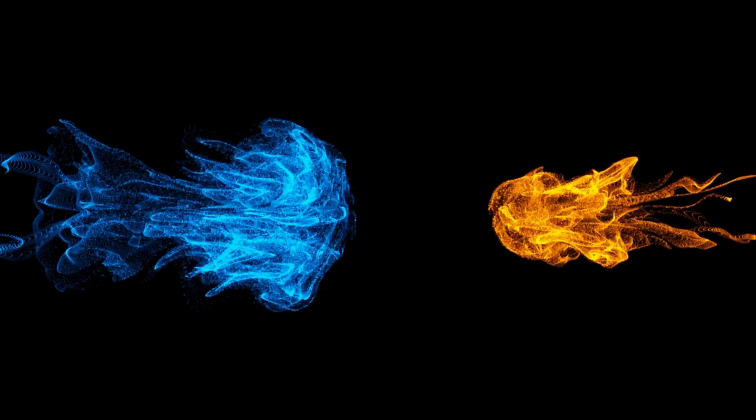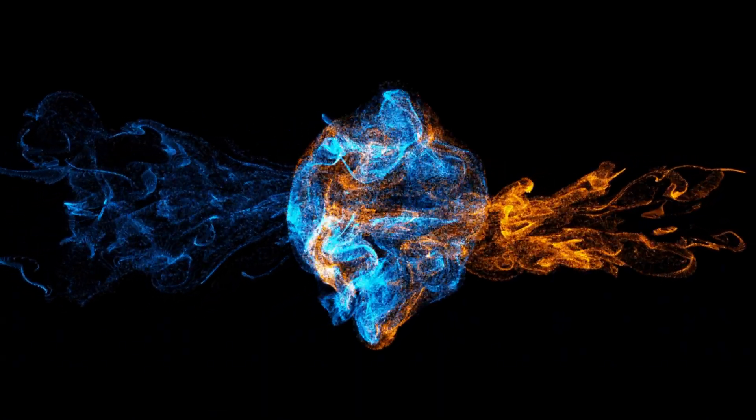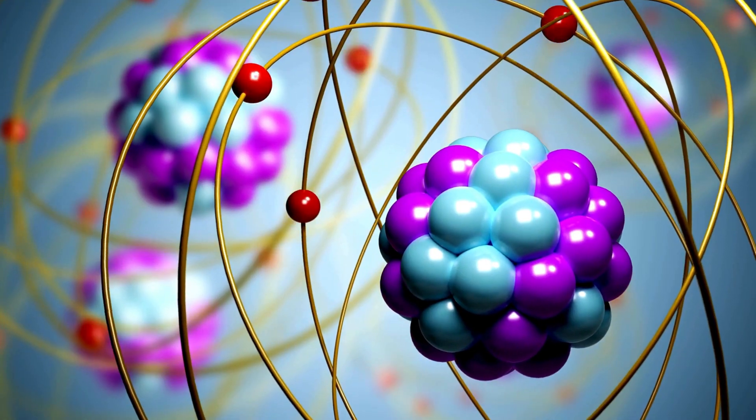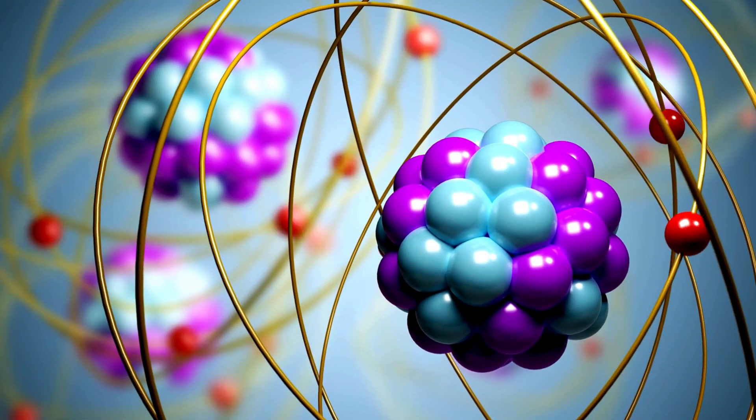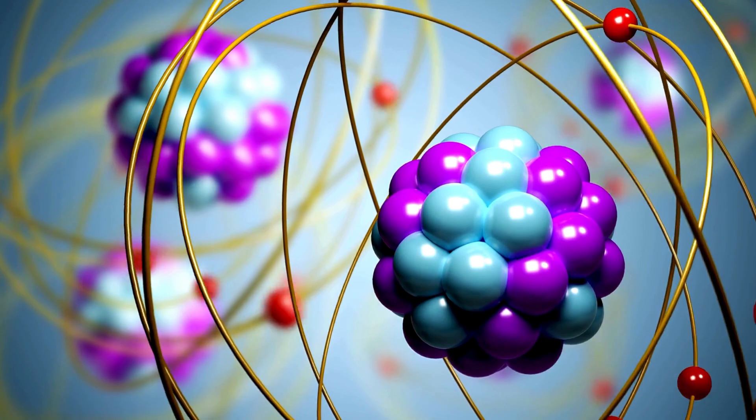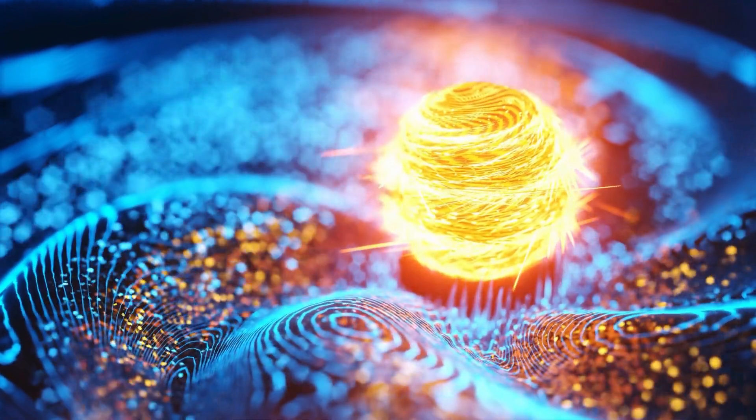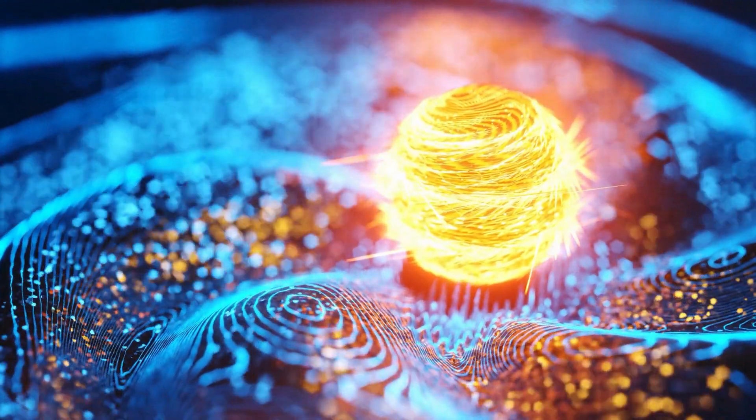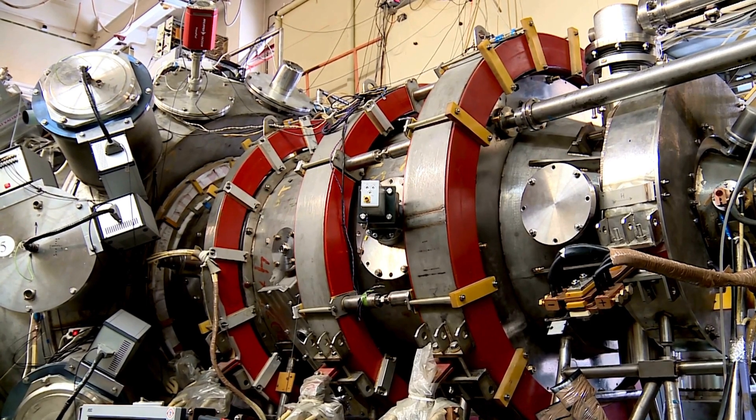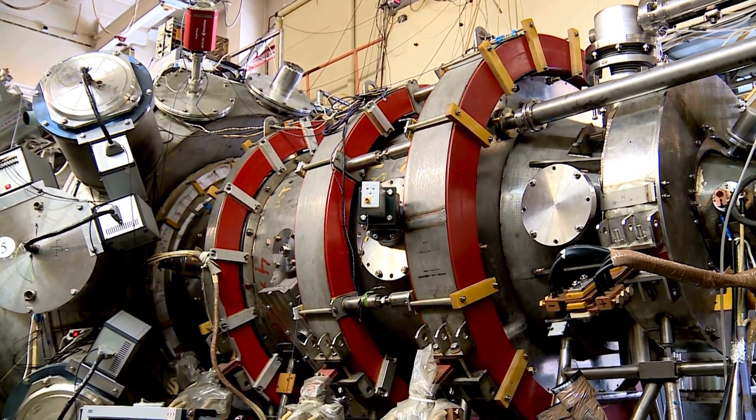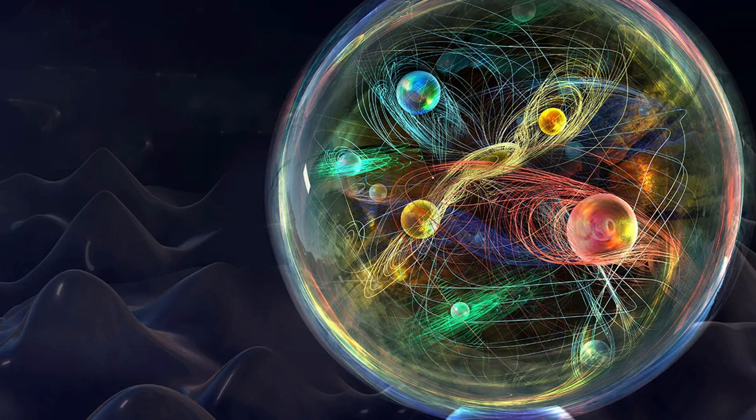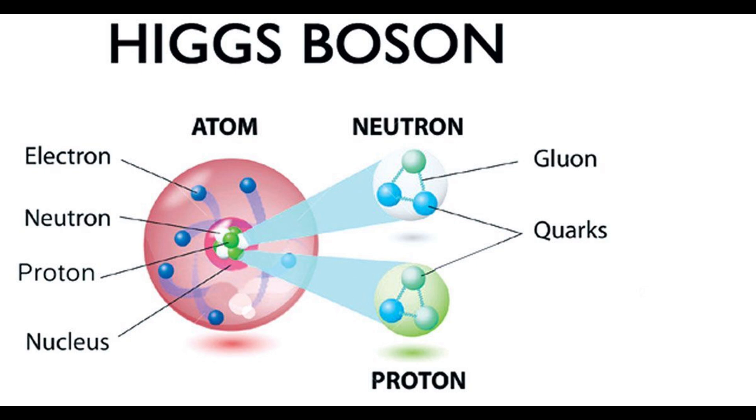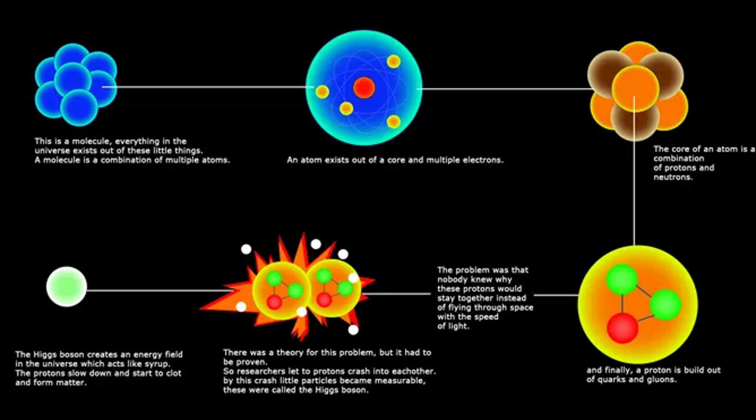While cosmic events like the bullet cluster provide clues, many scientists have turned to particle physics to search for dark matter on a smaller scale. In 2012, after decades of work, the discovery of the Higgs boson at CERN's Large Hadron Collider marked a major milestone in understanding the fundamental forces that govern the universe. The Higgs boson is responsible for giving particles mass, but it didn't offer a direct explanation for dark matter.